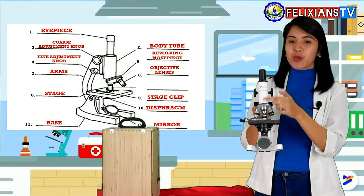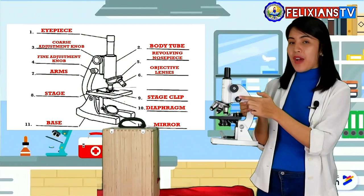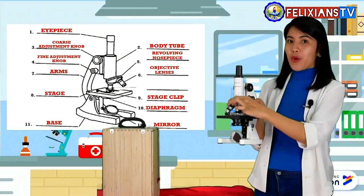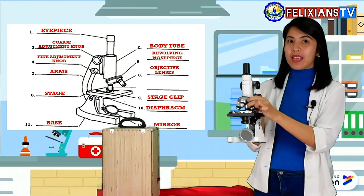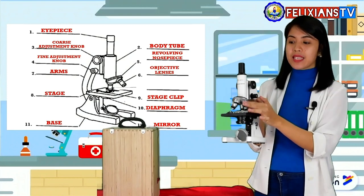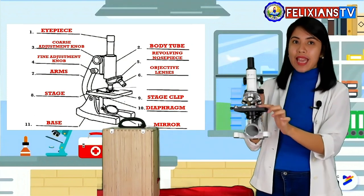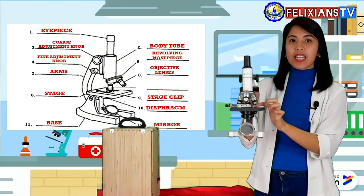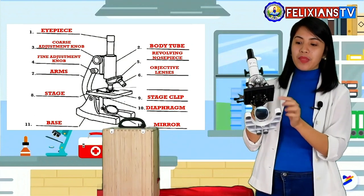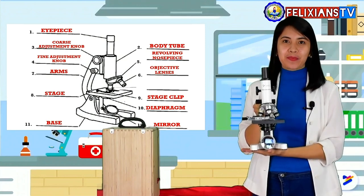And those are the parts and function of our compound microscope. So, the eyepiece, the body tube, the coarse adjustment knob, the fine adjustment knob, the revolving nosepiece, the objective lenses, the arm, the stage and the stage clip, the diaphragm, the mirror, and the base.